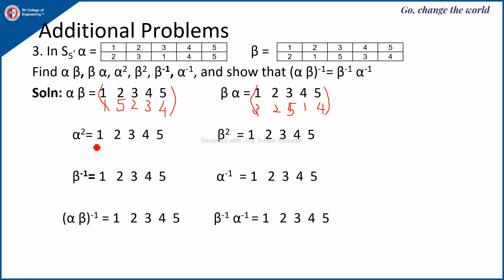Alpha squared is alpha composed with alpha. For element 1: alpha sends 1 to 2, then alpha sends 2 to 3, so 1 goes to 3. For element 2: alpha sends 2 to 3, and alpha sends 3 to 1, so 2 goes to 1. For element 3: alpha sends 3 to 1, and alpha sends 1 to 2, so 3 goes to 2. For 4: 4 goes to 4. For 5: 5 goes to 5. This is your alpha square.